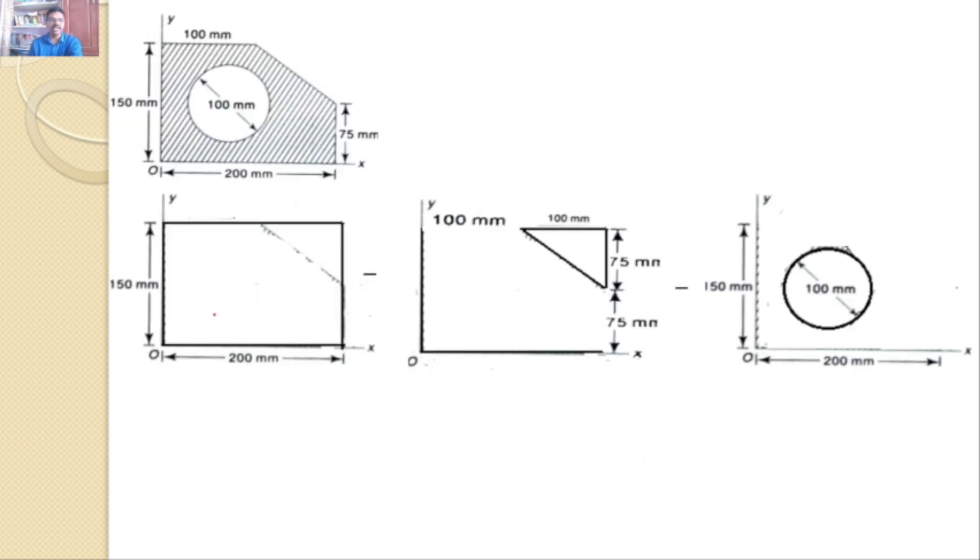Now first I will consider this rectangle. The centroid is exactly at the center minus the triangle, the centroid is here, minus the circle, the centroid is here.